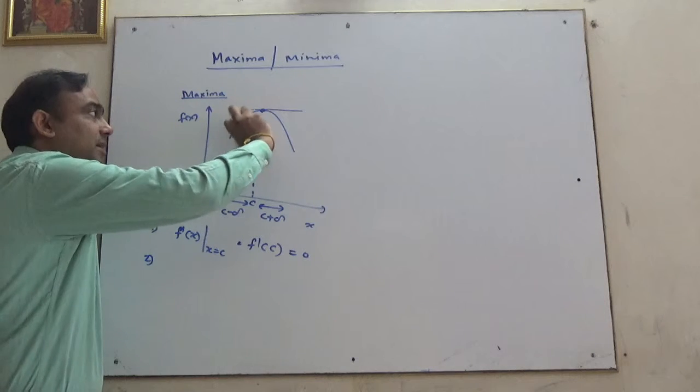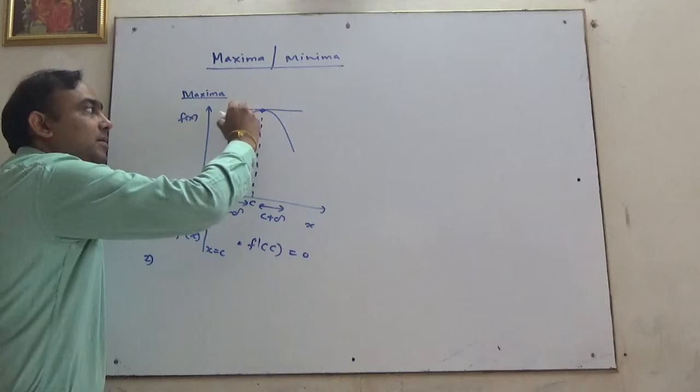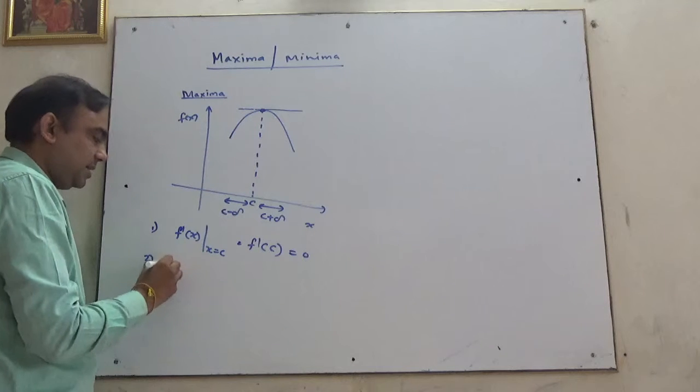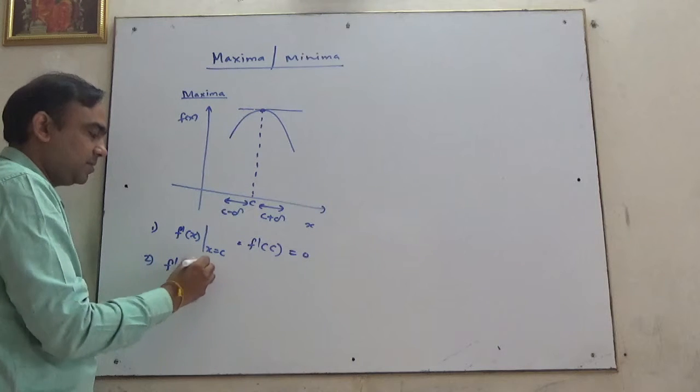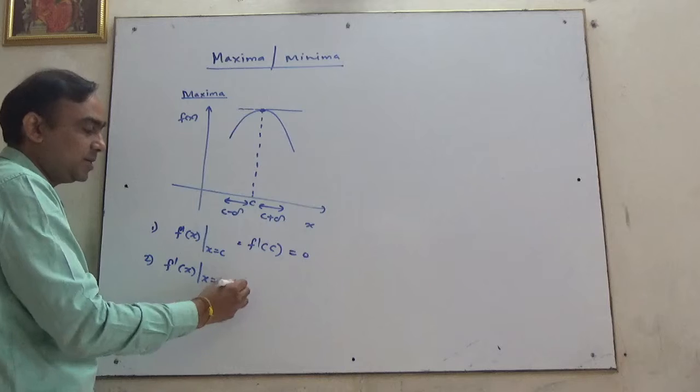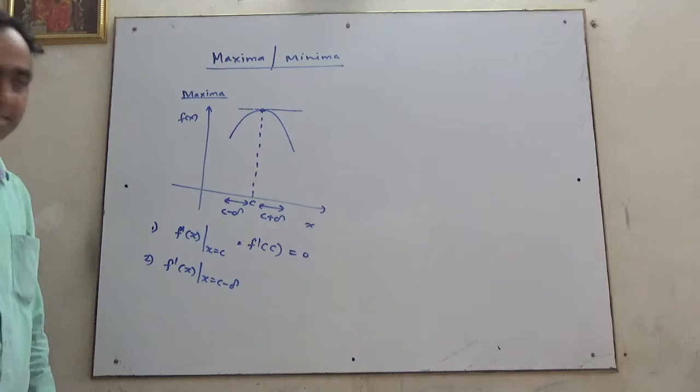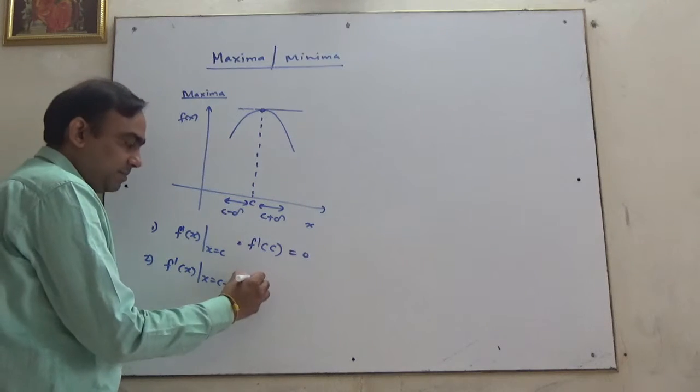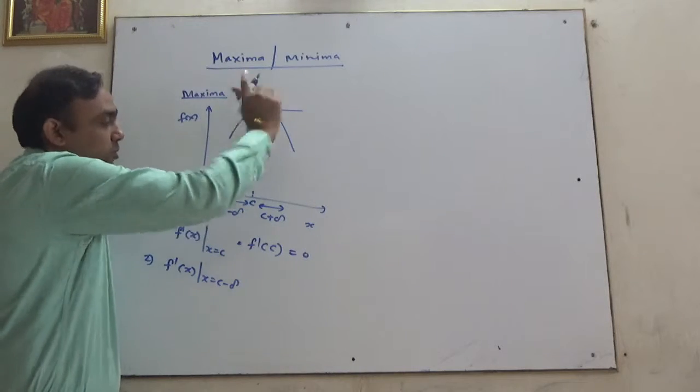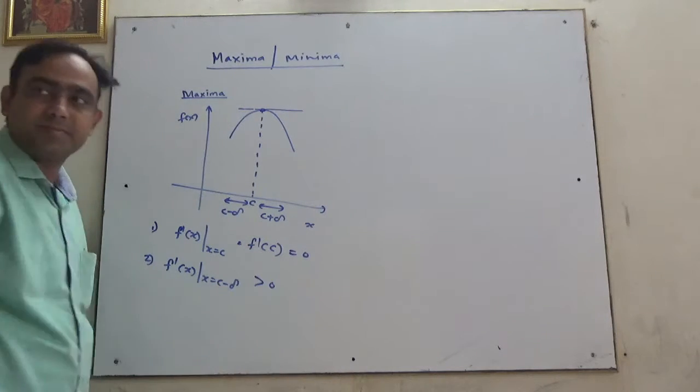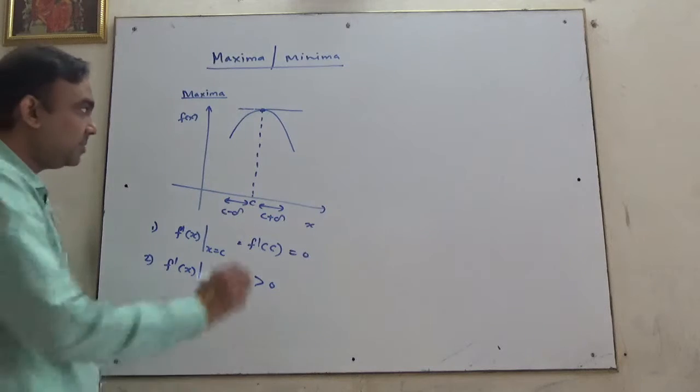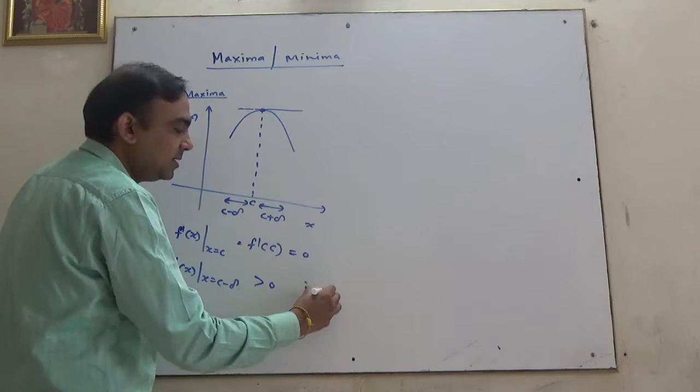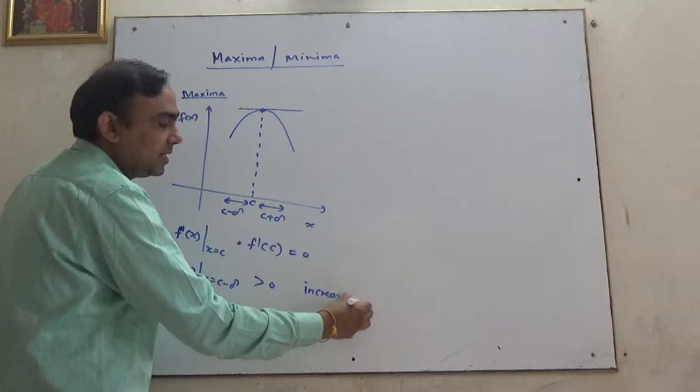Here the slopes, meaning F dash of x at x equals c minus delta. The slopes in this interval are greater than zero, meaning the function here is increasing.